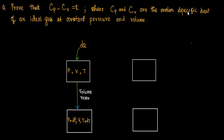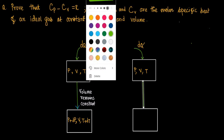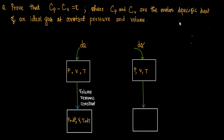On the right-hand side, when heat energy dQ prime is supplied to the ideal gas of pressure P, volume V, and absolute temperature T at constant pressure, the state of the gas changes. Pressure remains constant, volume increases to V plus dV, and absolute temperature increases to T plus dT.